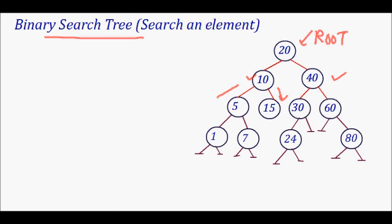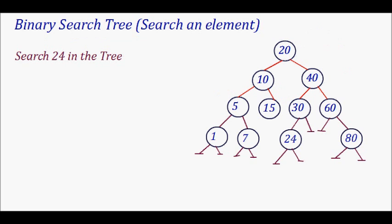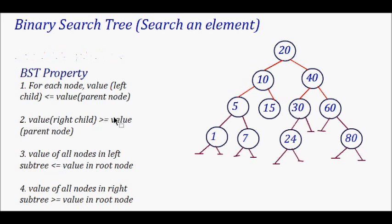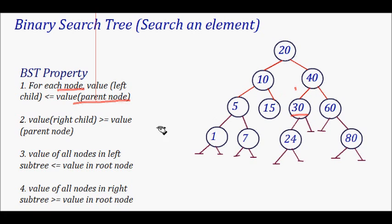The BST properties are: for each node, the value of the left child should be less than or equal to the value of the parent node. For example, the left child for node 40 is less than the value of the parent. Similarly, the value of the right child — for example, 15 — is greater than or equal to 10, so the value of the right child should be greater than or equal to the value of the parent node.